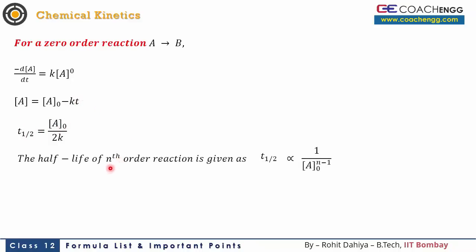For a general nth order reaction, the half-life is proportional to 1/[A₀]^(n−1). This is an important result. For example, for zero order (n=0): T½ ∝ [A₀]^(0−1) = [A₀], so directly proportional to A₀. For first order (n=1): T½ ∝ [A₀]⁰, meaning independent of initial concentration — consistent with T½ = 0.693/k that we already know.